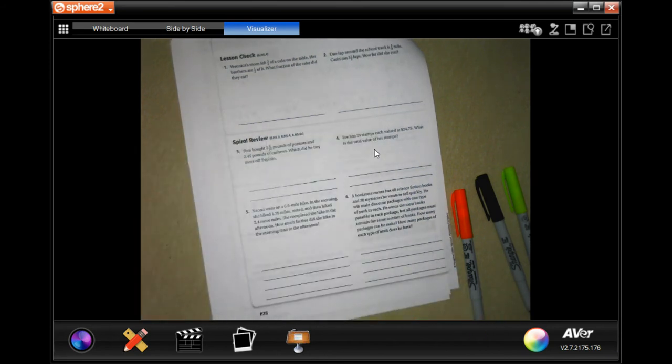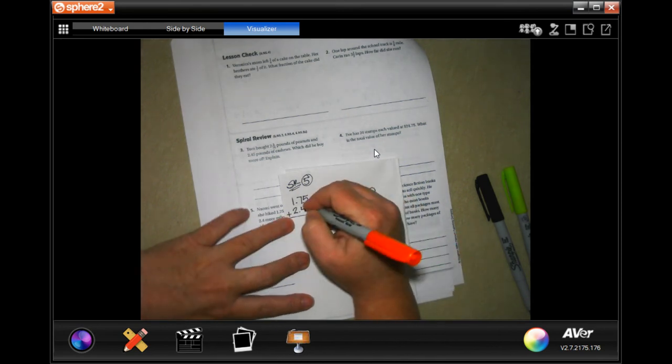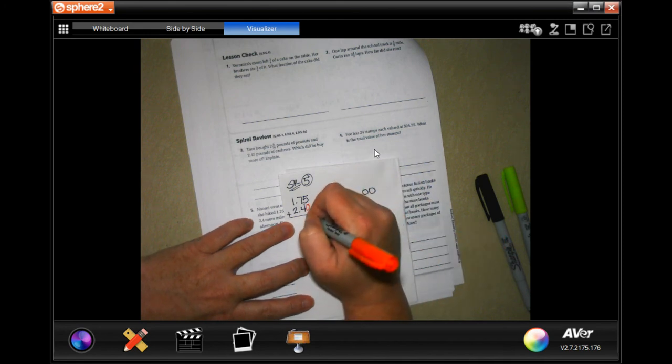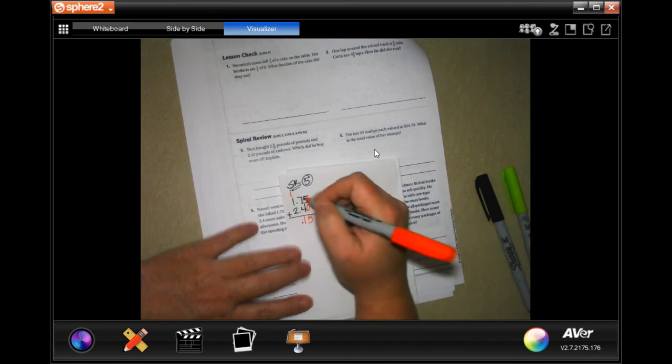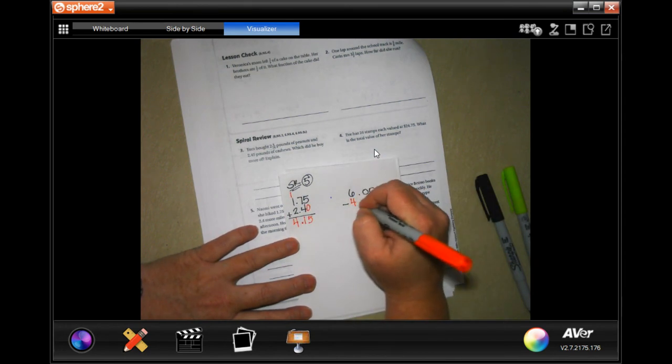Moving on, we're going to do number five. It says, Naomi went for a 6.5 mile hike in the morning. She hiked 1.7 miles, rested, and then hiked 2.4 more miles. She completed the hike in the afternoon. How much further did she hike in the morning than in the afternoon? First, you know exactly how much she hiked in the morning. I went ahead and we're going to add those up first. If you were to do it out because there's not the same amount of places in the decimal, you can put a zero. 5 plus 0 is 5. 7 plus 4 is 11, carry the 1. Make sure that you drop down your decimal. 1 plus 1 is 2, 2 plus 2 more is 4. So now we need to make that 6 miles total.